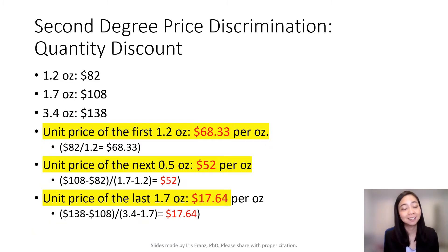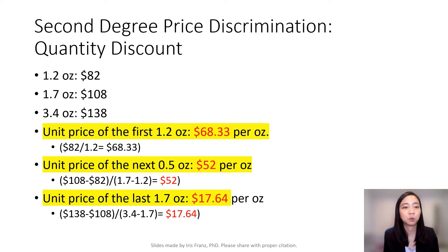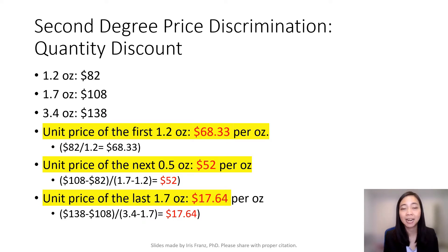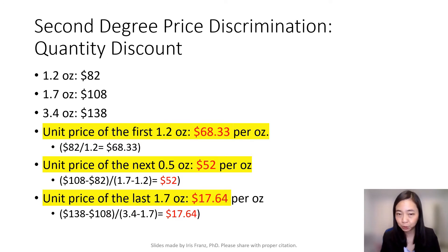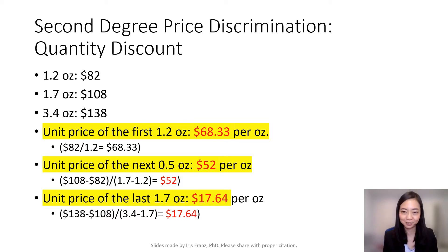Now we're ready to analyze the unit price of our Chanel fragrance. We have a size small, medium, and large. The small is 1.2 ounce, medium 1.7, and large 3.4 ounce. The prices are $82, $108, and $138 respectively. Therefore, the unit price of the first 1.2 ounce will be 82 divided by 1.2, which gives you $68 per ounce.